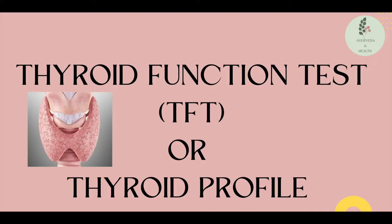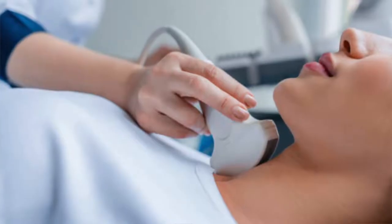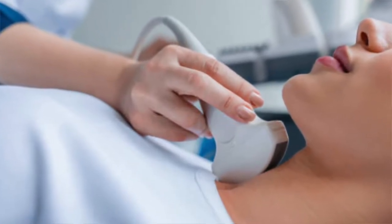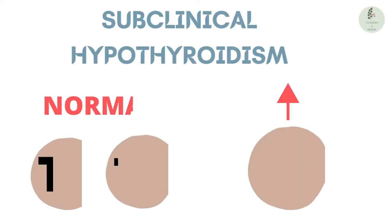Let's begin with the investigation part. For thyroid, we do a thyroid function test or thyroid profile. It includes T3, T4, and TSH levels. The next investigation is USG of the thyroid gland to estimate the size and volume of the thyroid gland. This covers the basic investigations. There is one term called subclinical hypothyroidism that everyone should know.